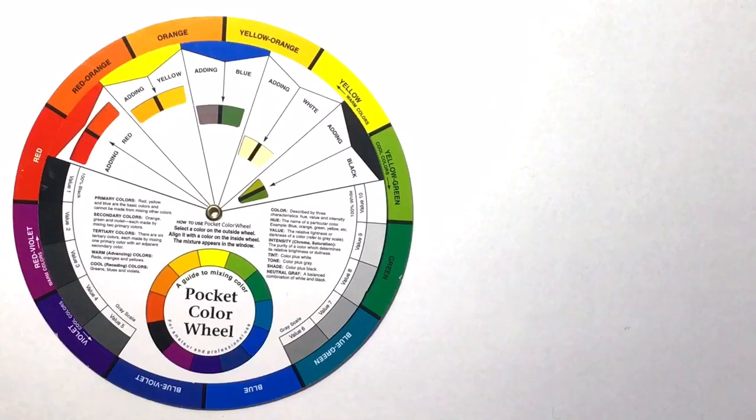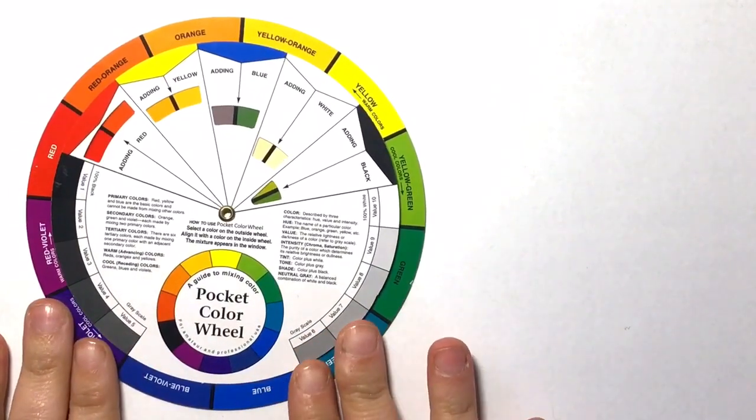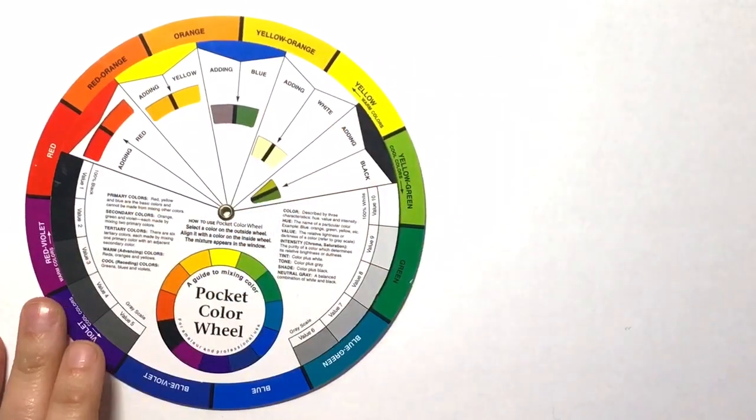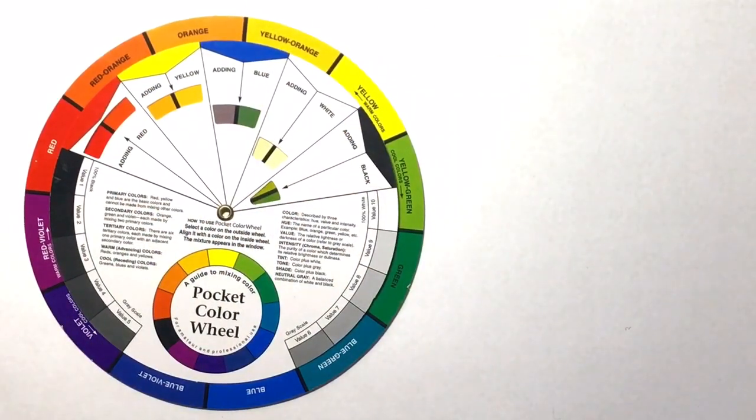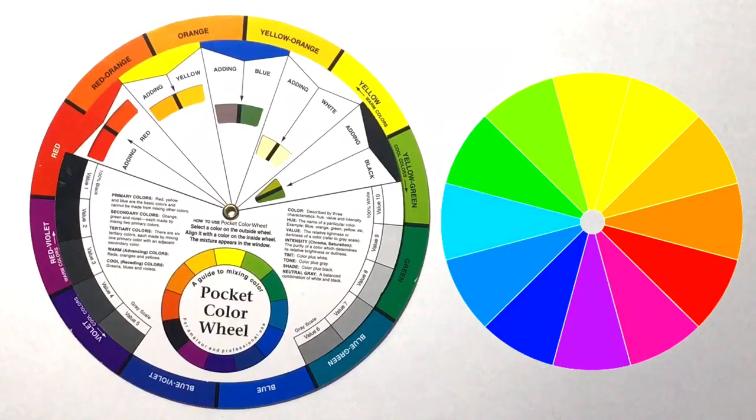The first and most important thing you need to understand about the color wheel is that each color is always positioned in the same place on every single wheel that's in rainbow order, and the rules you have to follow to find colors that look good together is always the same. So it doesn't matter what kind of color wheel you have, whether it's a physical one like this or a basic image off the internet, you'll be able to use it just the same.